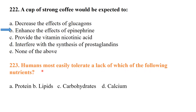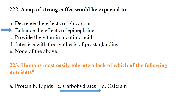Humans most easily tolerate a lack of which of the following nutrients? The answer is carbohydrates. Carbohydrate deficiency can be tolerated because in gluconeogenesis, non-carbohydrate sources can also produce glucose.